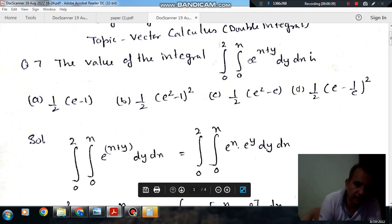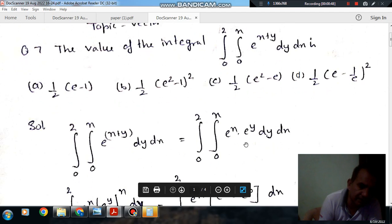So here, the double integral is 2 to 0 and x to 0, e^(x+y) dy dx. This can be written as e^x multiplied by e^y dy dx.